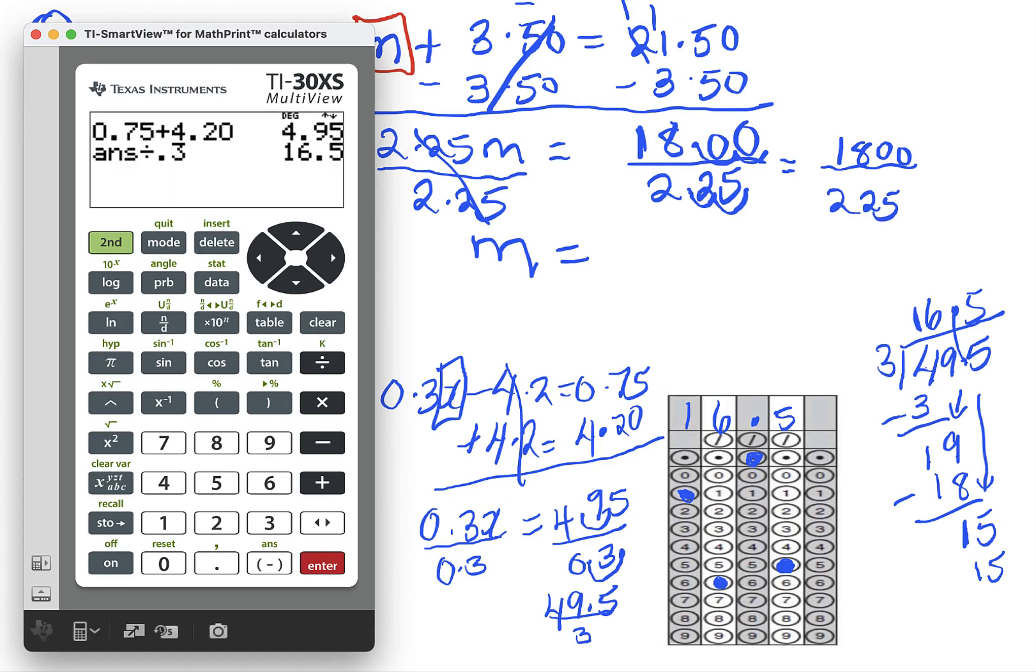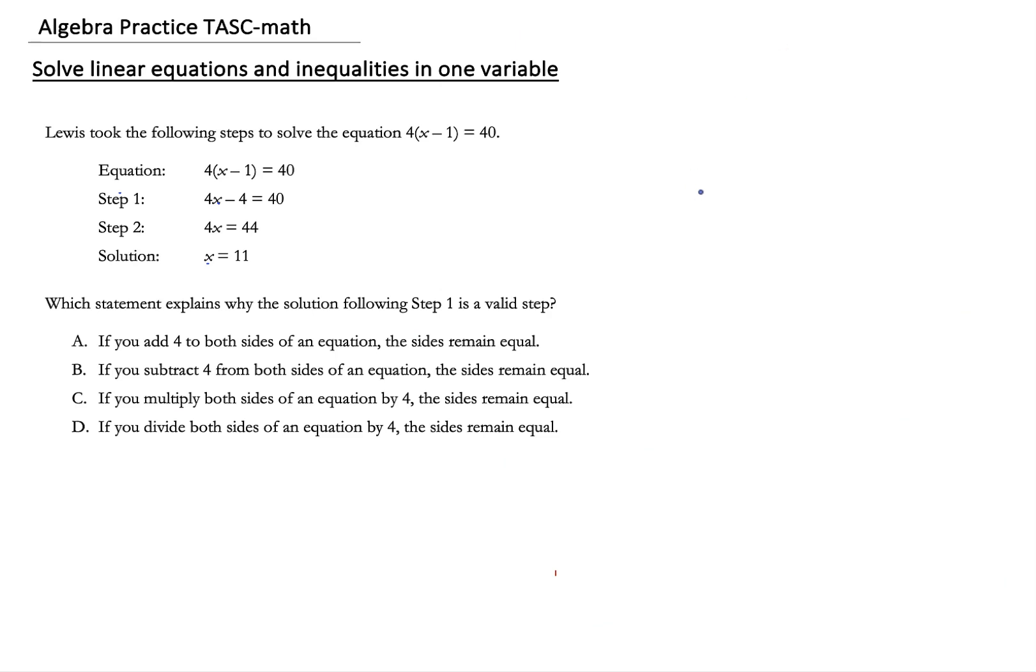Now on the TASC test sometimes they don't want you to actually solve the problem. They'll give you a word problem and you have to figure out how would you solve the problem, like what will be the steps. So this is what this question is actually doing here. It says Lewis took the following steps to solve the equation 4(x minus 1) equals 40, and then they outline the steps here. There's a red flag, they don't include all the steps. If you notice here, they jumped from 4x minus 4 equals 40 to 4x equals 44, so sometimes they don't actually write all the steps which is fine.